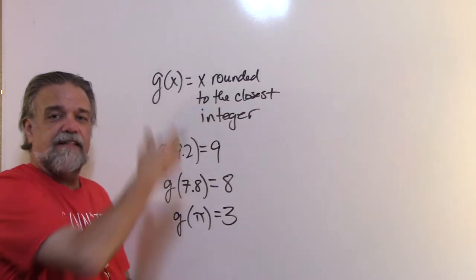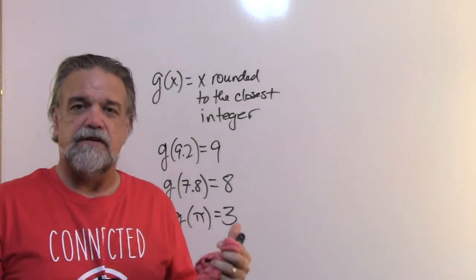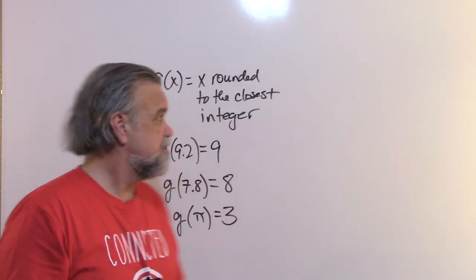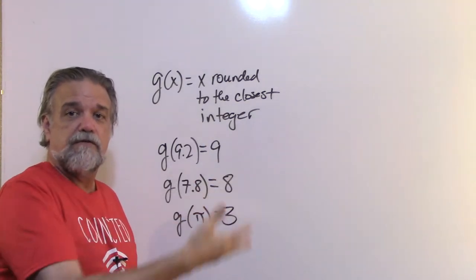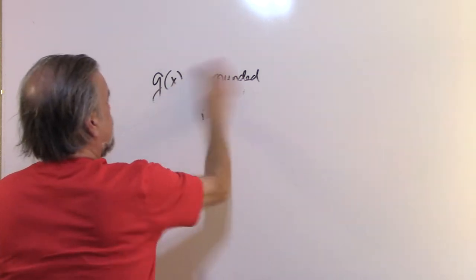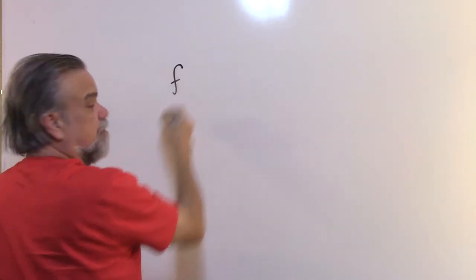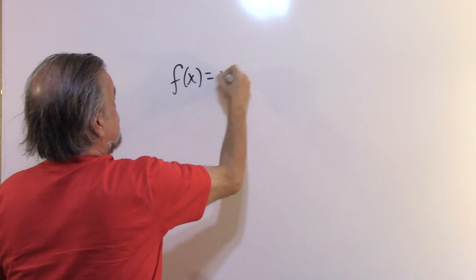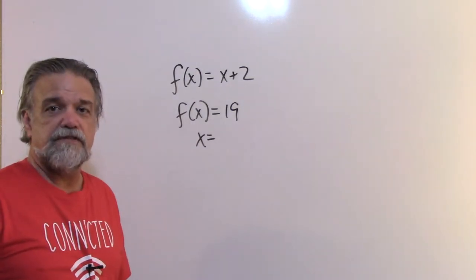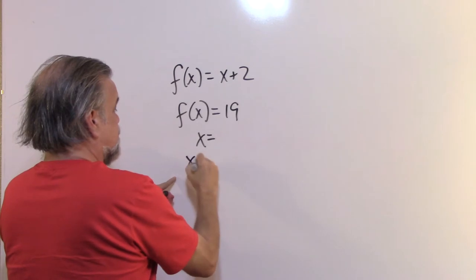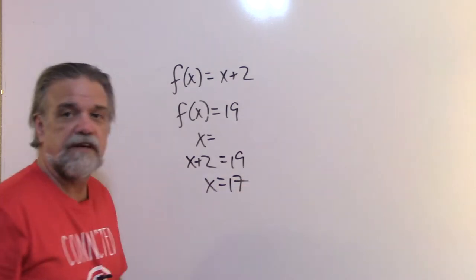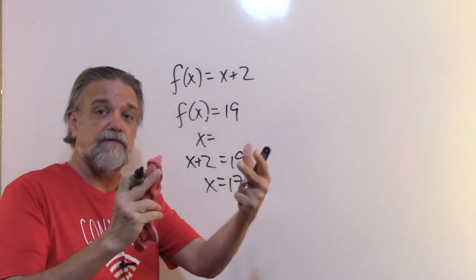This is function notation, and what we're doing is evaluating functions. There are two verbs to know: evaluate and solve. When we evaluate functions, we tell what the value of the function is given a particular x. When we solve, we ask: if f(x) = 19, what is x? Since f(x) = x + 2, we get x + 2 = 19, subtract 2 from both sides, and x = 17.